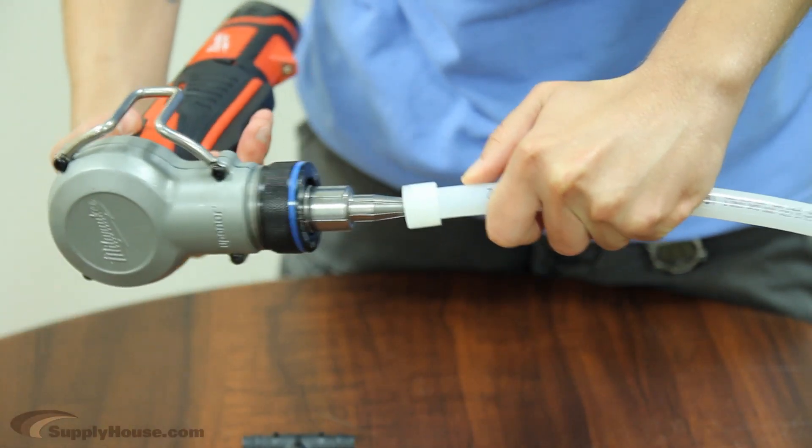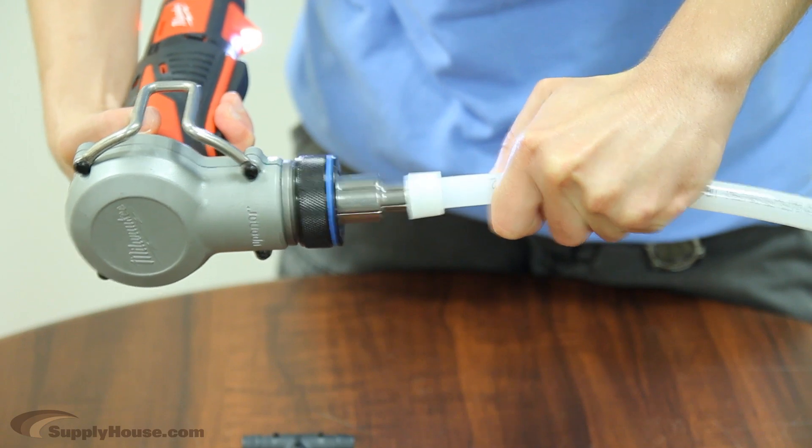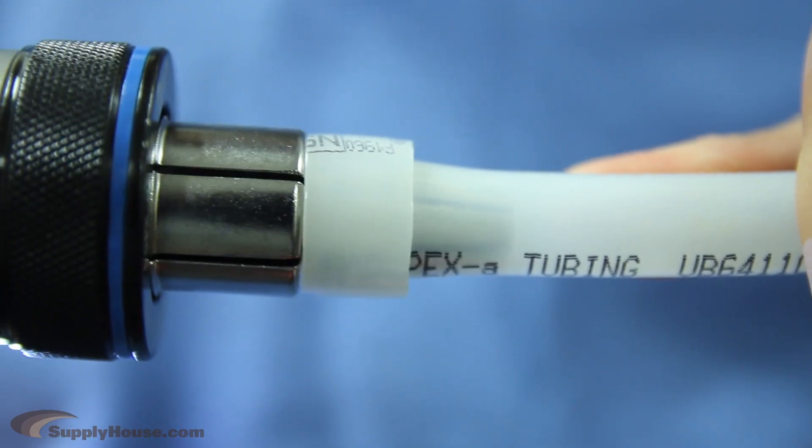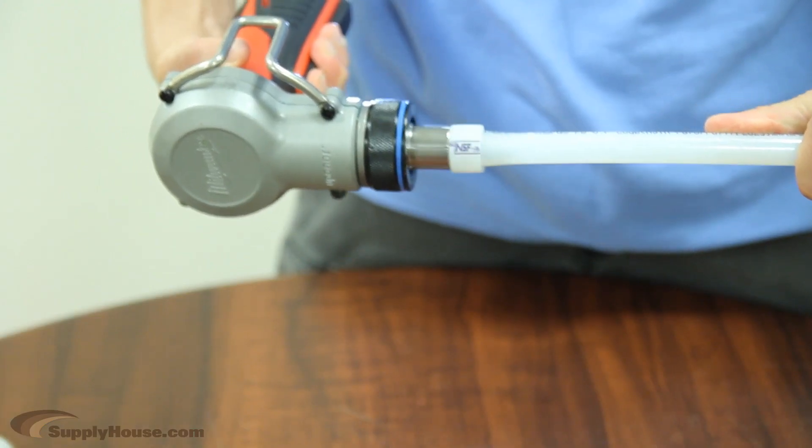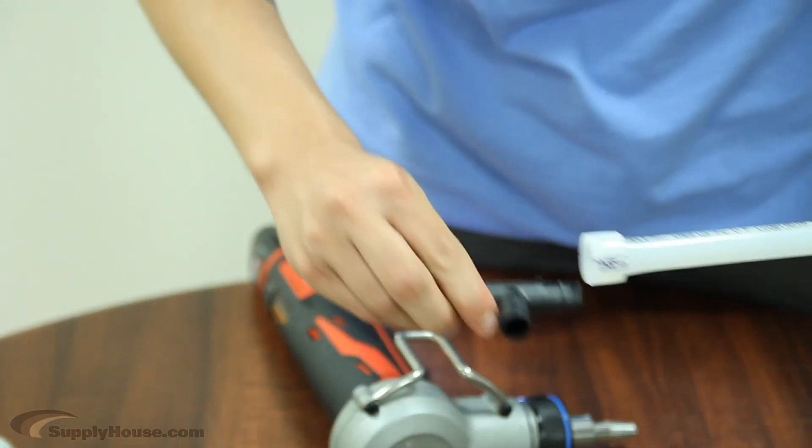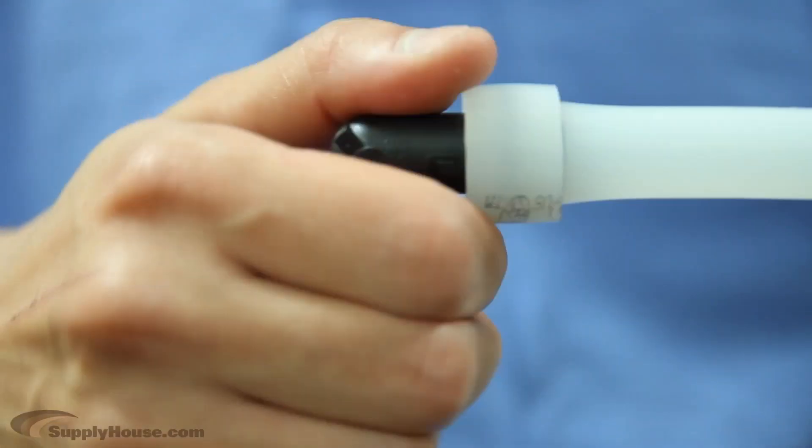The Propex fitting system is a strong, reliable, and durable connection method that uses the shape memory of PEX A tubing to form watertight, leak-resistant connections. This connection needs no torches, glues, solvents, or gauges to hold tight with up to 1,000 pounds of force.